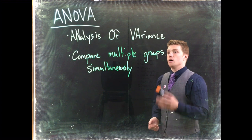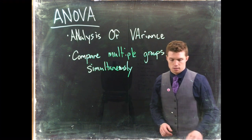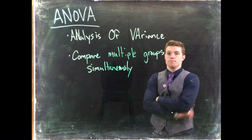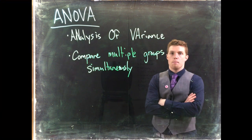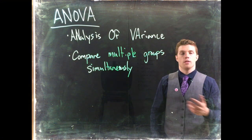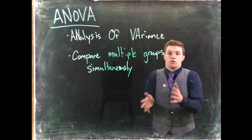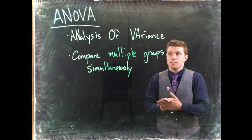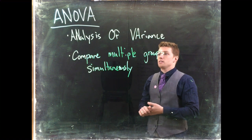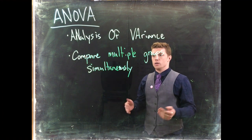ANOVA lets us take numerical data and group it by some categorical variable. The categorical variable is basically how we're going to try to see if these groups are different at all. That's the backbone of ANOVA.